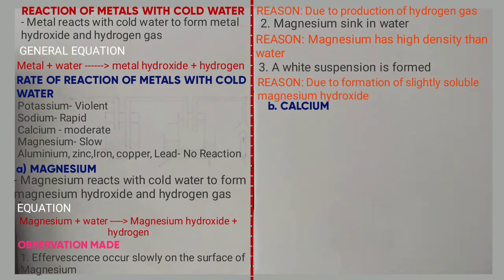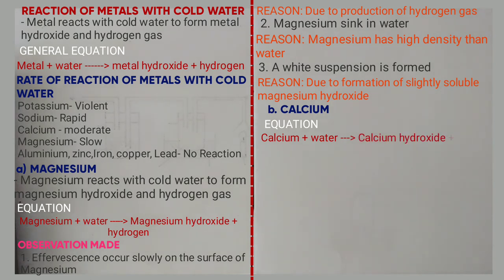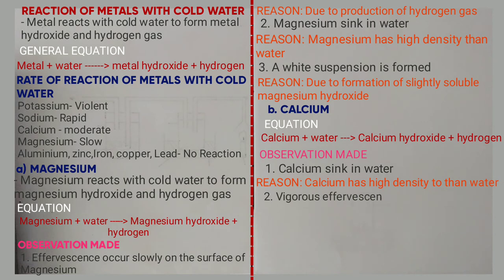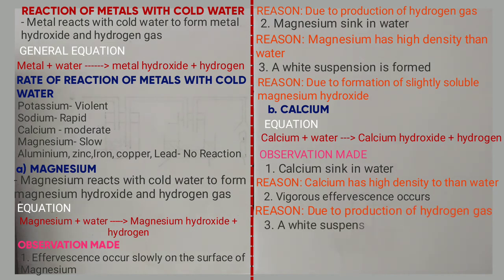The next metal is calcium. Calcium reacts with cold water to form calcium hydroxide and hydrogen gas. Equation: Ca + H₂O → Ca(OH)₂ + H₂. The nature of the solution formed is basic. Observations when a piece of calcium is dropped in water: 1. Calcium sinks in water — because calcium has higher density than water. 2. Vigorous effervescence occurs — due to production of hydrogen gas. 3. A white suspension is formed — due to formation of slightly soluble calcium hydroxide.